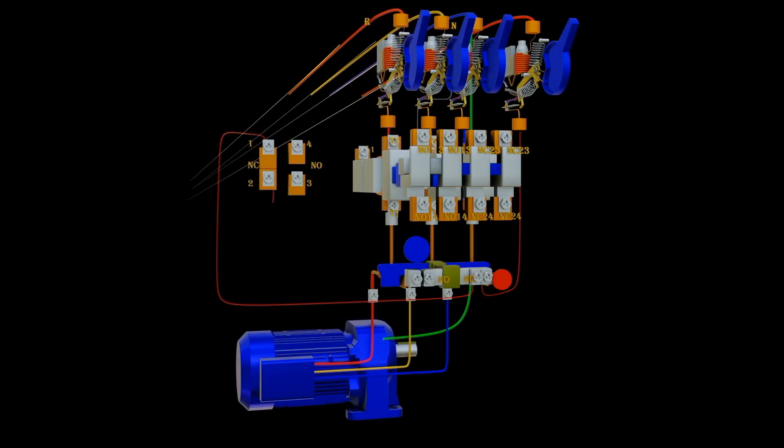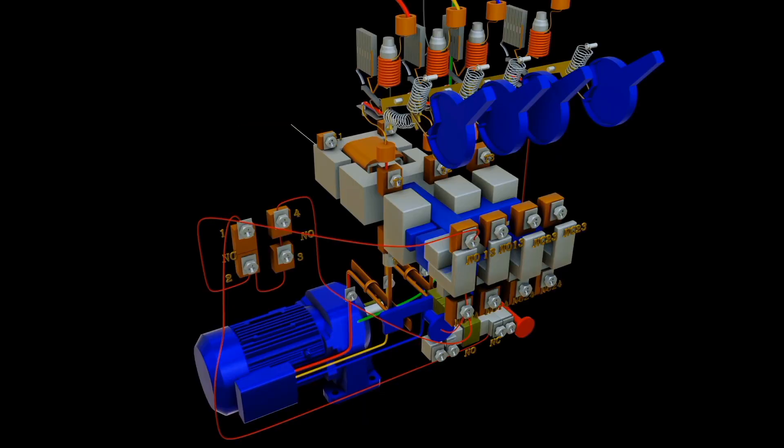Then, from terminal 2 of stop push button, we then connect them in two ways. One is connected to the normally open of push button terminal 3, and the other to normally open of the contactor terminal 13. Then, terminal 4 of start push button is connected to terminal 14, which is looped to terminal A1 of the contactor coil.